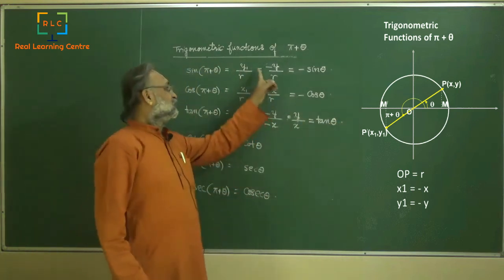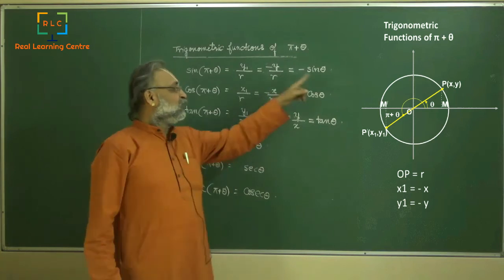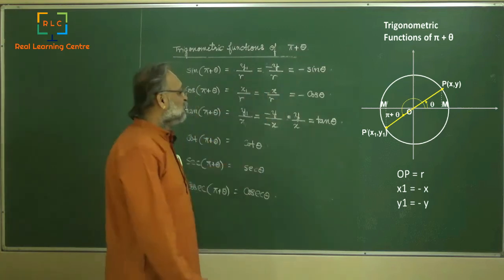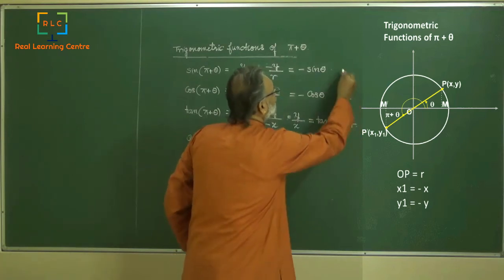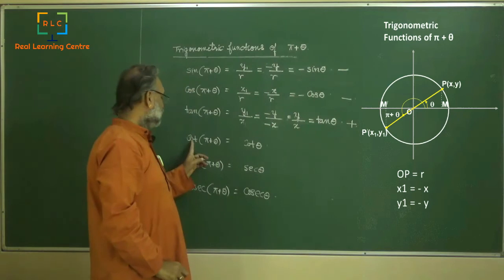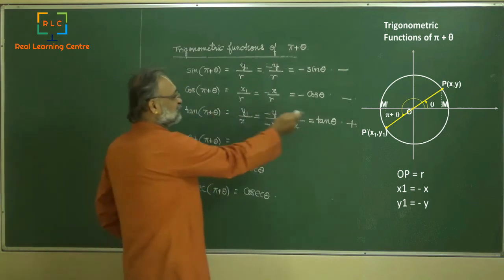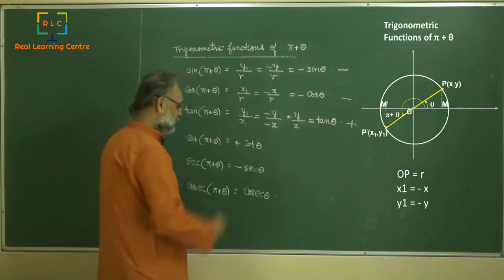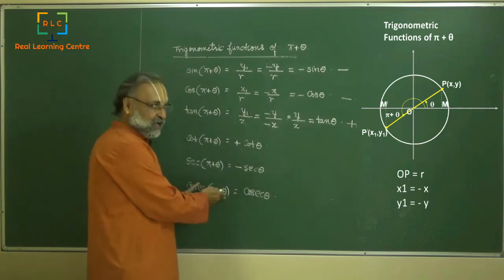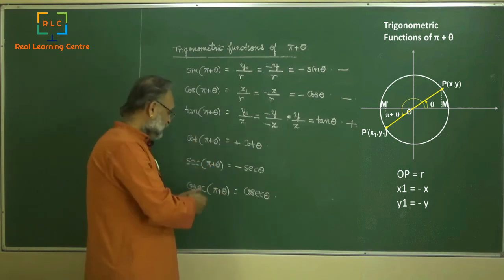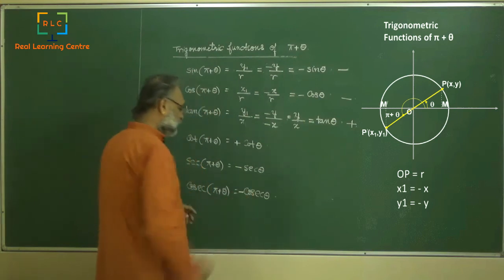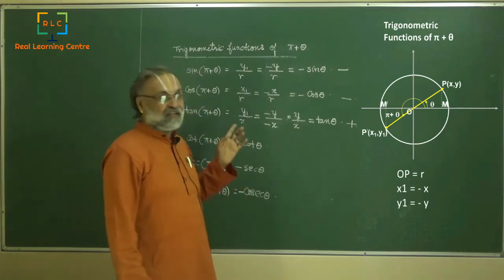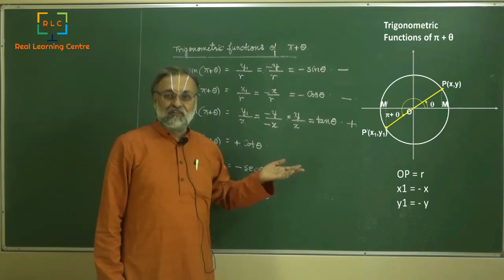This is something very special to observe: since sin and cos are both negative in the third quadrant, tan becomes positive. Cot(π + θ) equals plus cot θ. Sec(π + θ) equals minus sec θ. Cosec(π + θ) equals minus cosec θ. The speciality of the third quadrant is that only tan is positive, and when tan is positive, cot is also positive.